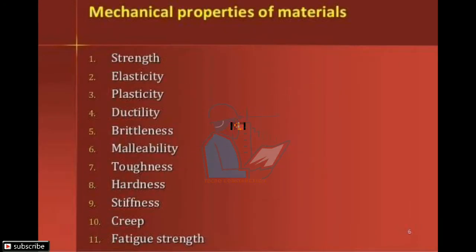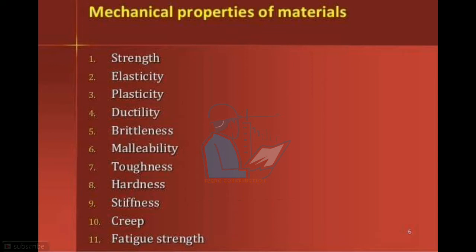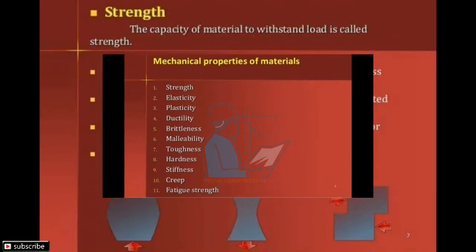Now, the mechanical properties of materials. A material consists of many properties and characteristics: strength, elasticity, plasticity, ductility, brittleness, malleability, toughness, hardness, stiffness, creep, and fatigue strength.